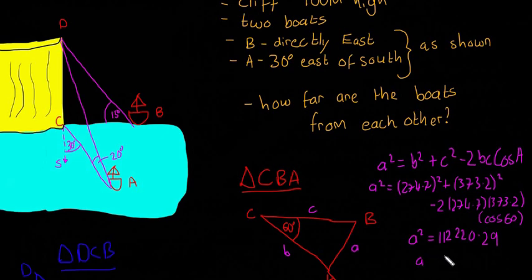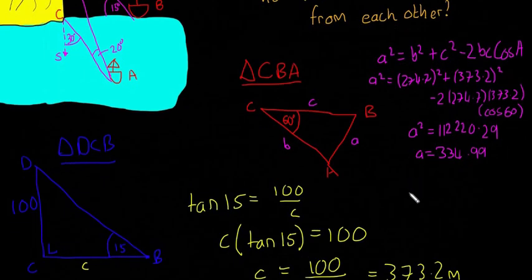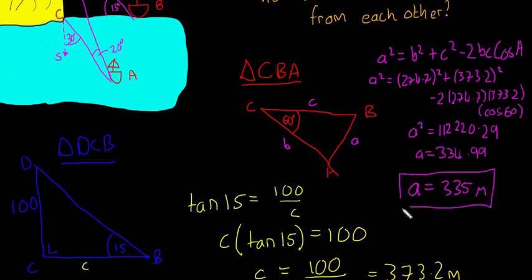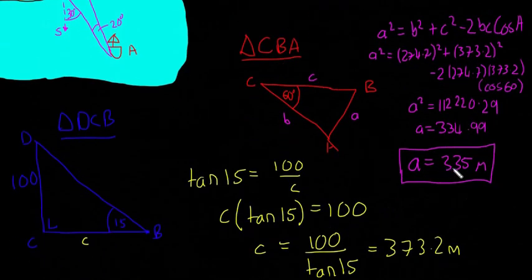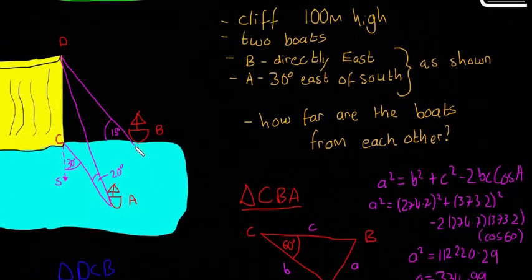So A is going to be the square root of that, which will give us. So then A is equal to 334.99. If you want to round that up, then you can say A is equal to 335 metres. And there we have it. So if you want to write that as AB, you can do that too. I'm just calling it A in this question here. So that is how far are the boats from each other? They're at 335 metres if you draw a direct line from A to B.